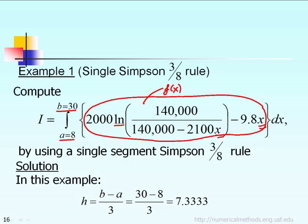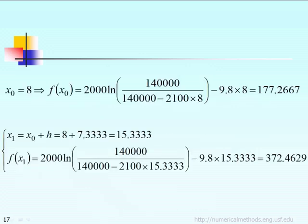According to the single Simpson 3/8 rule, the first thing we have to calculate is the width of the increment h, which is b minus a over 3. With b equal to 30 and a equal to 8, h is equal to 7.3333.